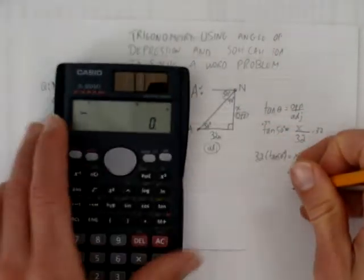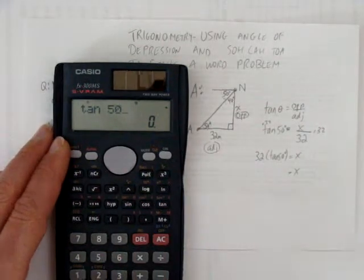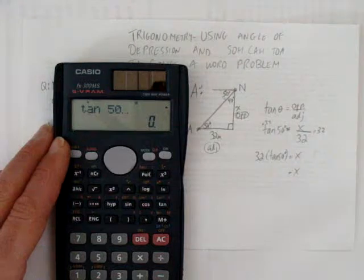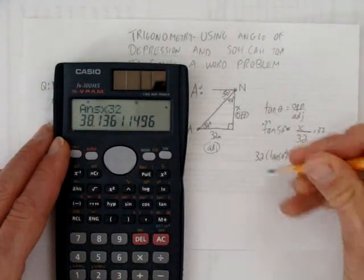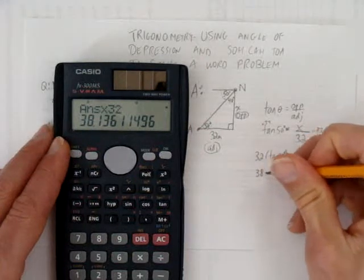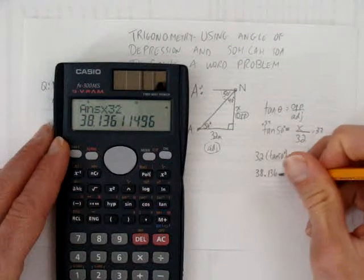And so x equals, let's take out our calculator. I'd like to start with tangent of 50 degrees first, so I don't have to put my brackets. Tangent of 50 degrees times 32. And I get, let's round to three decimals, 38.136. The units are meters.